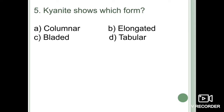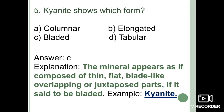Next question: kyanite shows which form — columnar, elongated, bladed, or tabular? The mineral appears as if composed of thin flat blade-like overlapping or juxtaposed parts; it is said to be bladed in nature. The habit of a mineral is defined as the size and shape of the crystal — the form in which it presents itself — and that physical property is known as habit.